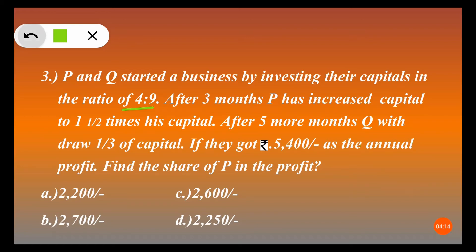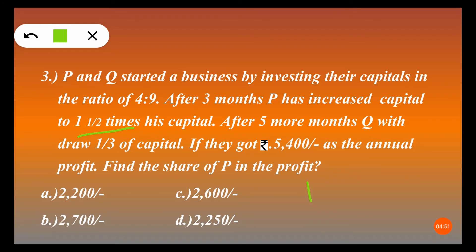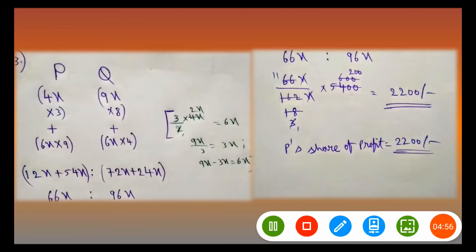In this question the investment amounts are not given — only the ratios, 4 to 9. We consider their investments as 4x and 9x respectively. After three months, P increased his capital to one and a half times, that is 3/2 times his investment. After five more months — meaning after a total of 8 months — Q withdrew one-third of his capital. The annual profit is 5,400 rupees and we need to find P's share.